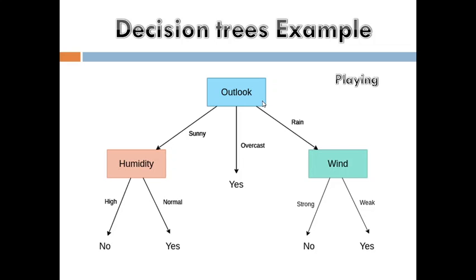Consider another example for playing. Take the outlook condition: sunny, overcast (cloudy), or rain. If it is sunny condition, check humidity — if humidity is high, you are not playing; if humidity is normal, you will play. If the outlook is overcast, you will play. If the rain condition is true, check wind — if wind is strong, you are not playing; if wind is weak, you will play.